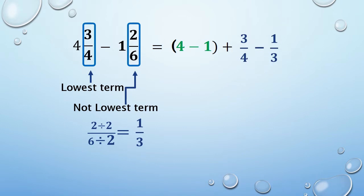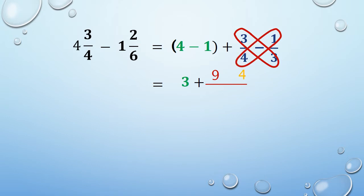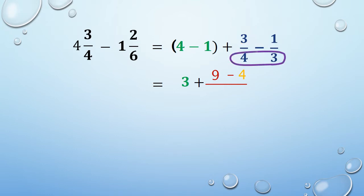Refer to subtraction of fractions using the butterfly method to learn more. A link is provided in the description below. To get the numerator of the answer: first, multiply the numerator of the minuend by the denominator of the subtrahend; second, multiply the numerator of the subtrahend by the denominator of the minuend; then subtract the two products. To get the denominator of the answer, multiply the denominators.